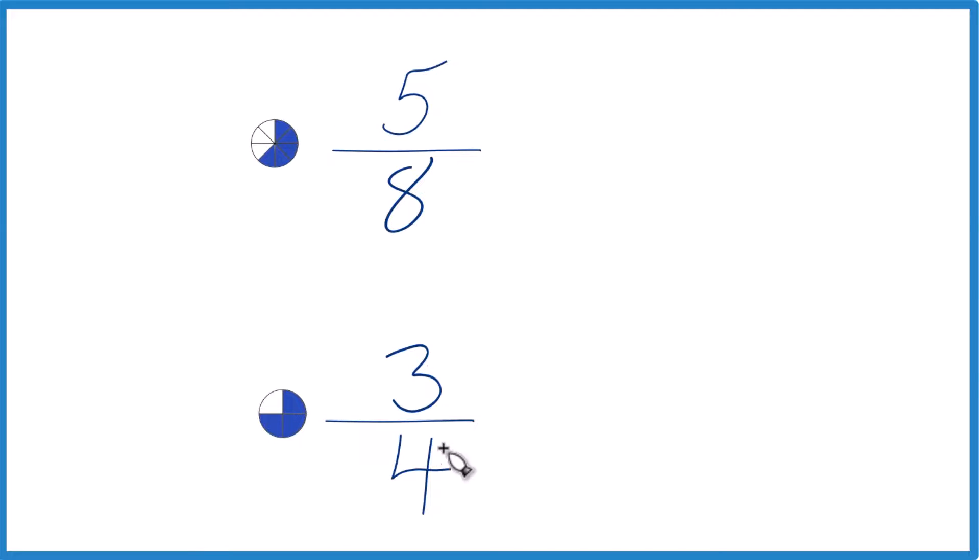So I have 8 here. It looks like if I just multiply 4 times 2, that would give me 8. And then, because I did it to the bottom, I need to do it to the top as well. 3 times 2 is 6. So now I have 5 eighths here. We don't need to change that. It's already 8. So 8's the same.